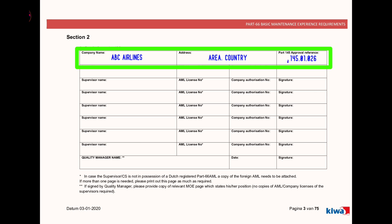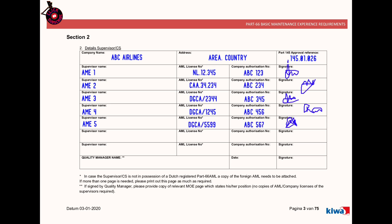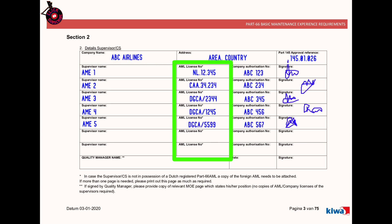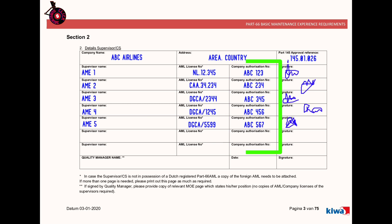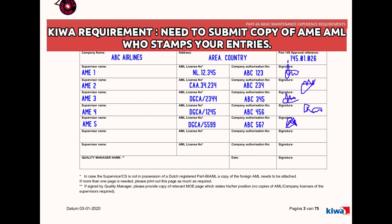Whichever AME or supervisor is signing your entries, you have to make an index like this and write all the details: the AME name, approval number, company authorization number, and take the signature or stamp as per KIWA requirement. During application you have to submit the scanned copy of all the AML licenses of whoever AME is signing your logbook.